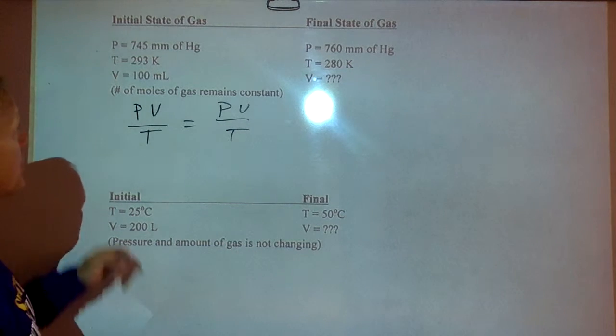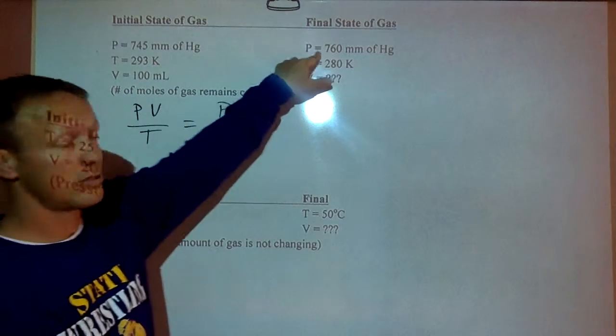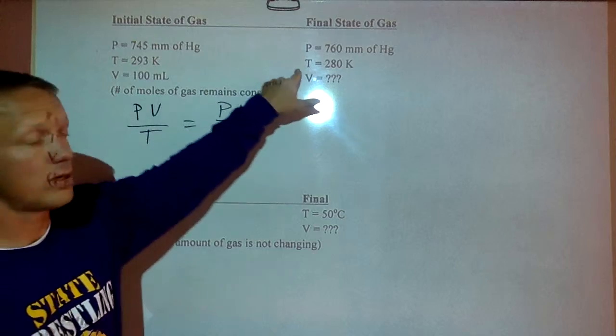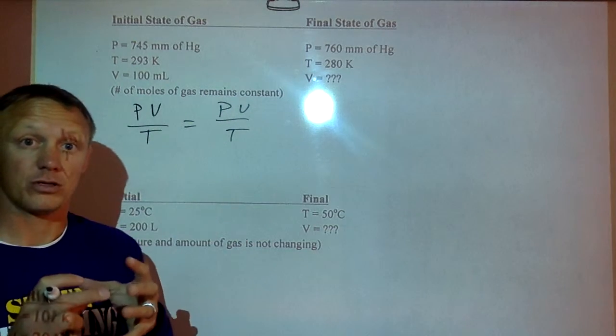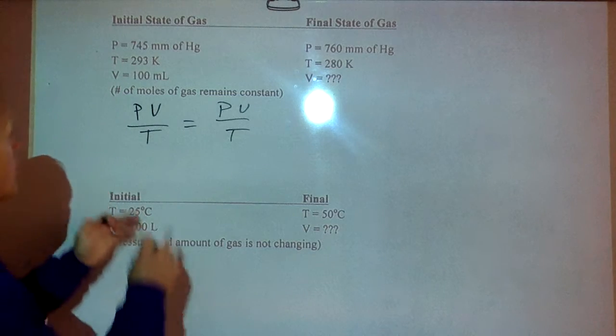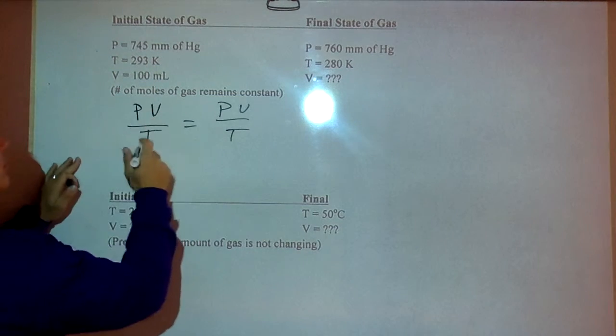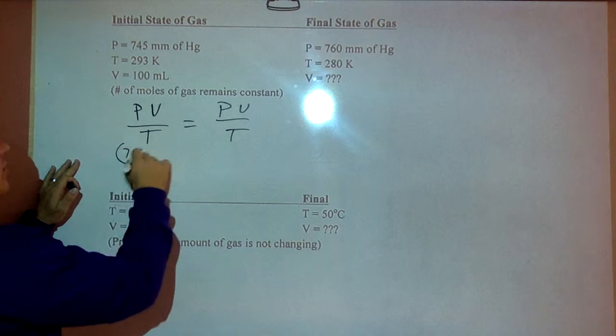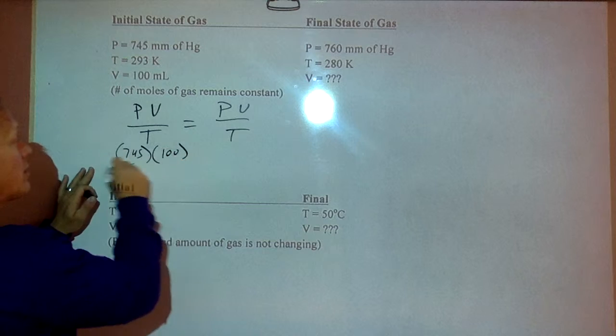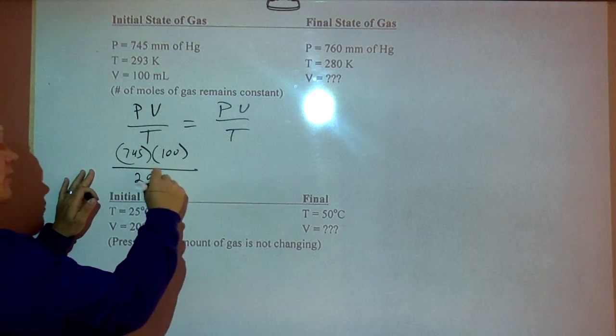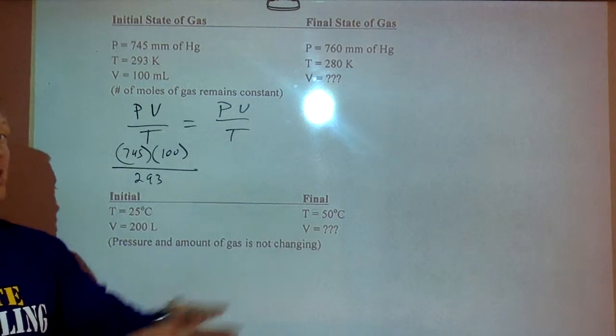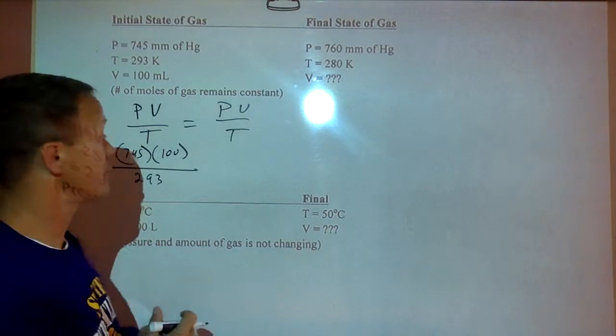If we look at this one, here's our pressure. Our pressure is going up. That should make the gas get smaller. Our temperature is going down. That should also make the gas get smaller. So our volume should be less than 100 when we're done. We're going to plug in these numbers. Our pressure is 745, our volume is 100 when our temperature is 293. Our temperature has to be in Kelvin in every problem. Nothing else matters as long as it's the same on both sides, but temperature has to be in Kelvin.